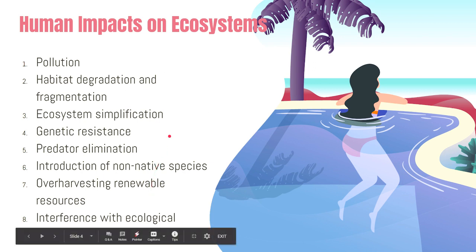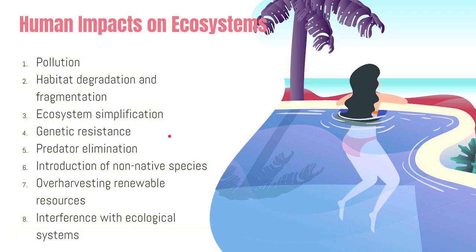So these are just some of the many human impacts on ecosystems: pollution, habitat degradation and fragmentation, ecosystem simplification, and genetic resistance.